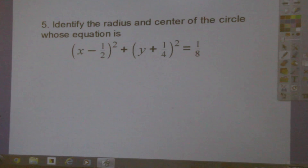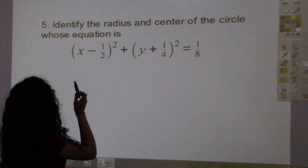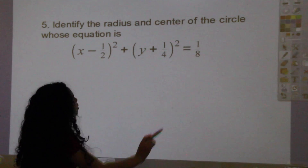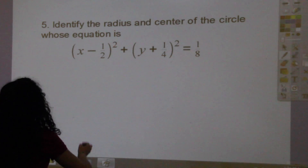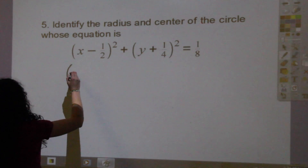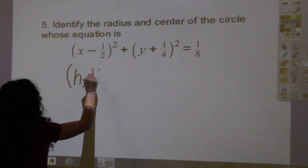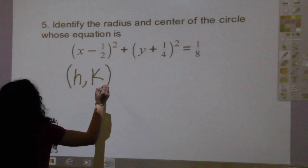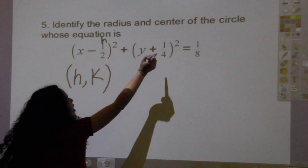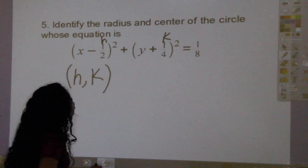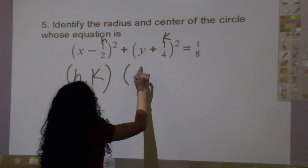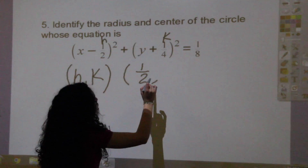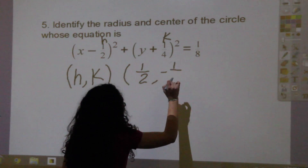Question number 5 asks you to identify the radius and center of the circle, whose equation is this. I should remind you that the center of a circle is (h, k) — this is h, and this is k. So that would end up being 1 half and negative 1 fourth.